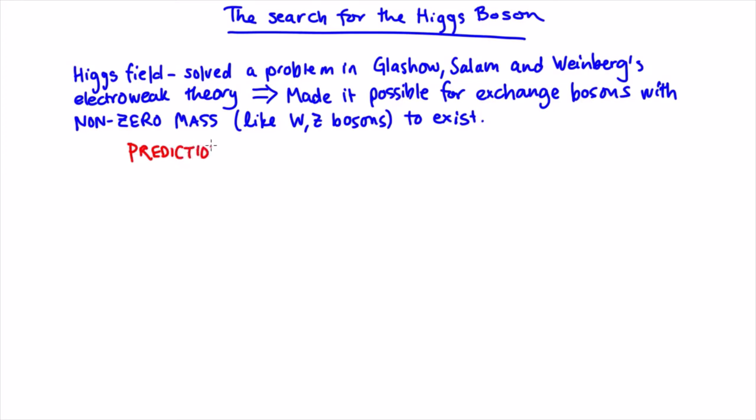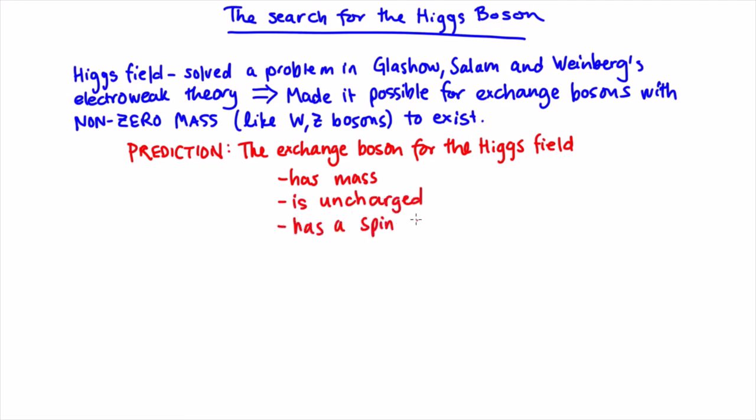This is where the Higgs boson comes in. You see, the Higgs field has to have a way to communicate with particles that interact with it, meaning it needs an exchange boson as well. The Higgs boson is this exchange boson, and it has a few specific predicted properties: it's a fundamental particle with zero spin, no charge, and non-zero mass.